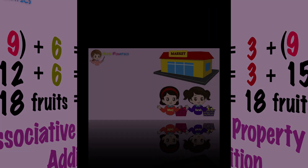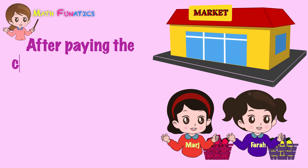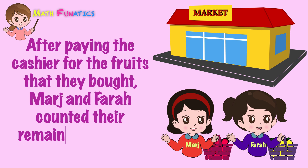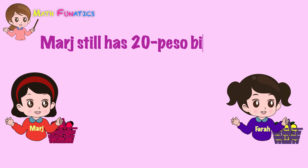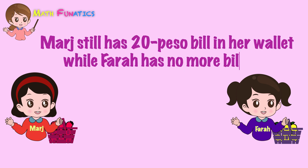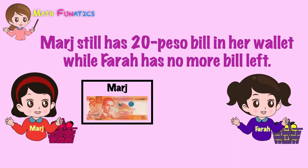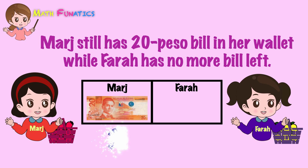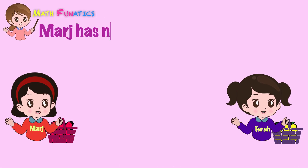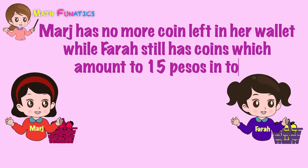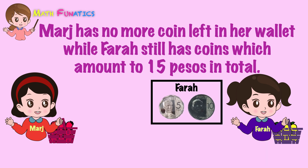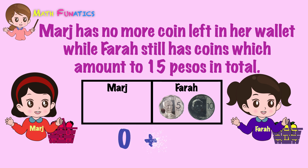Now let's analyze the next situation. After paying the cashier for the fruits they bought, Marge and Farah counted their remaining bills and coins. Marge still has a 20-peso bill in her wallet, while Farah has no more bill left. This may be written as 20 plus 0. On the other hand, Marge has no more coin left, while Farah still has coins totaling 15 pesos. This may be written as 0 plus 15.